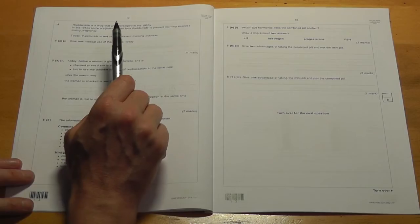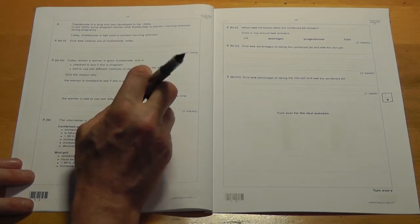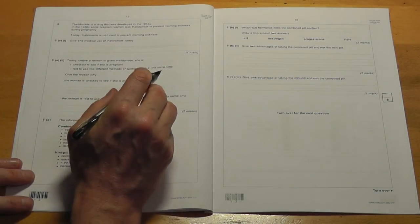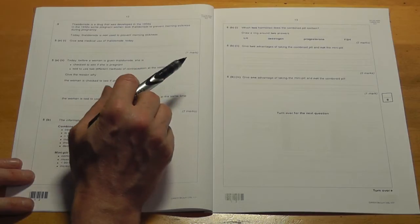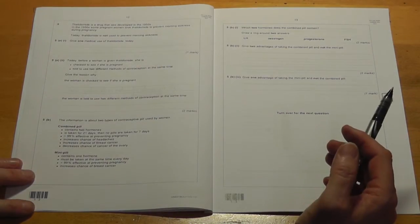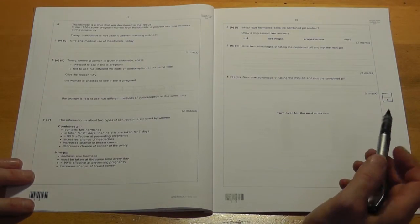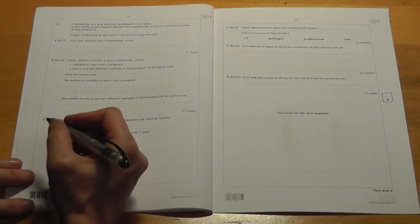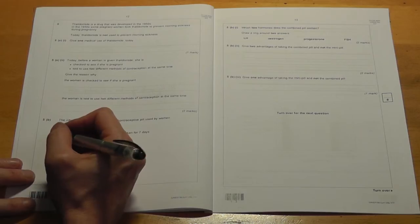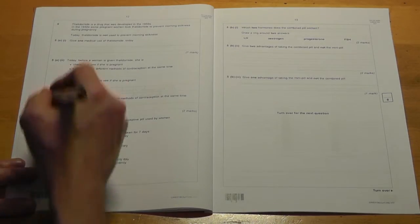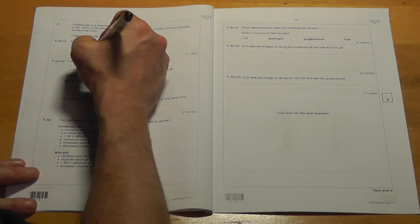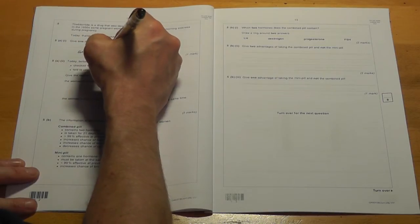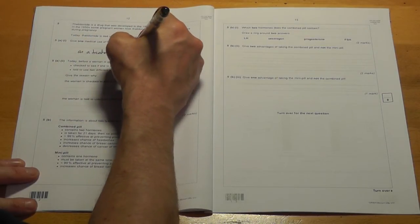Well, this question is all about the problems with Thalidomide which caused some birth defects, particularly in the late 50s and early 60s. It was drawn from use now. We don't use it anymore for this purpose. But it is still used. You've got to know this. If you don't know it, you won't get the answer. It can be used as a sleeping pill or it can be used to prevent leprosy. So I'm going to put the second one down as treatment for leprosy.